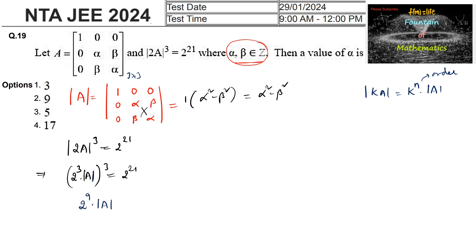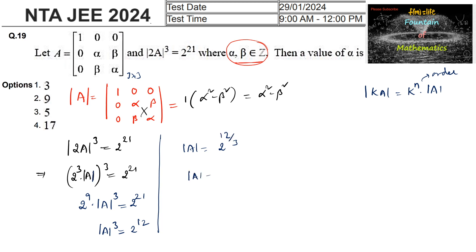From 2⁹ · (det A)³ = 2²¹, we get (det A)³ = 2¹², so det(A) = 2⁴ = 16.